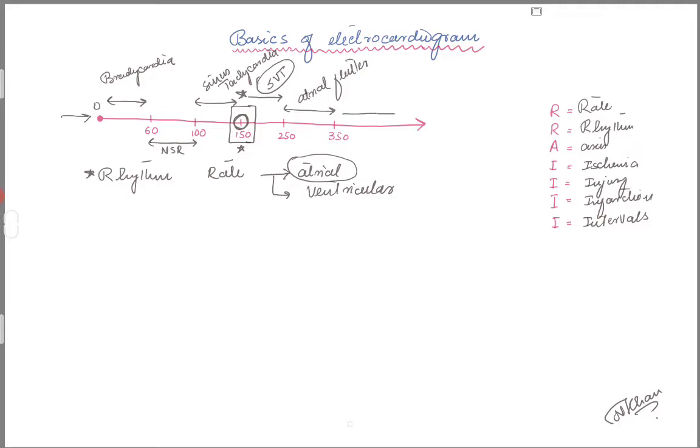Above 350, can go up to 500, is your atrial fibrillation. Again, we're talking about the atrial rates. This makes it very easy to look at the EKG.